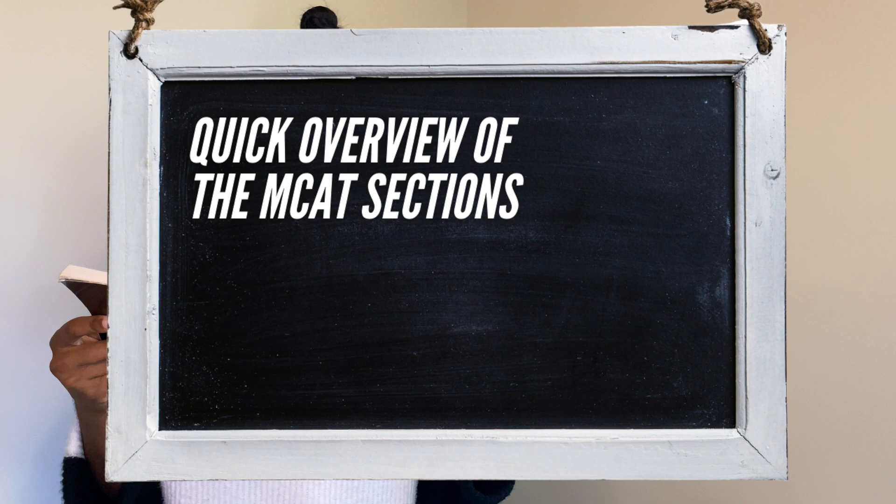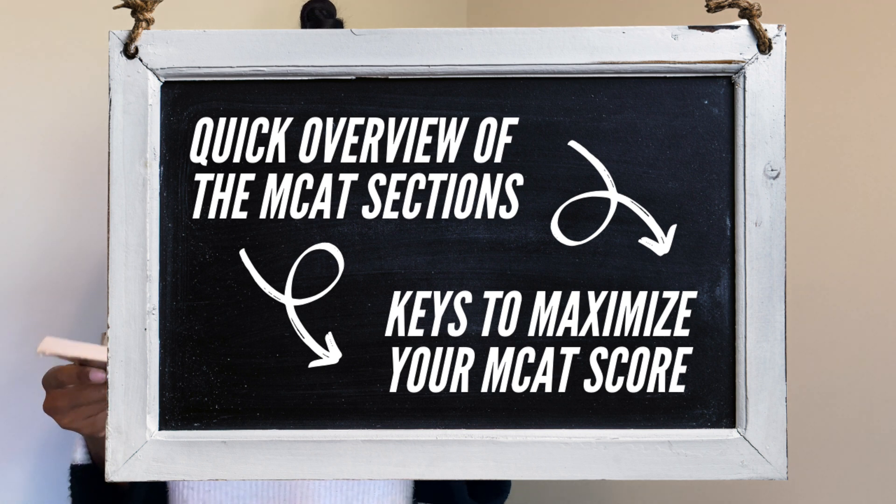Now that we're done with our quick overview of the MCAT sections, let's jump into those keys you need to maximize your MCAT score. The first thing you're going to have to do is close out your content review. If you navigate your study plan and do not ensure that you have covered all the content tested on the MCAT, you will have a difficult time reaching that score you wish to have. Make sure you have a great handle on: Biology 101 and 102, General Chemistry 1 and 2, Biochemistry 1, Physics 1 and 2, Organic Chemistry 1 and 2, and Psychology and Sociology — before getting too deep into your MCAT study plan.